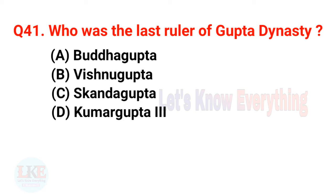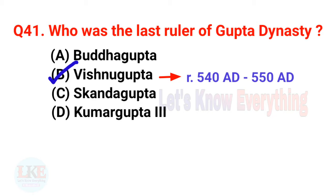Last and final question — Question 41: Who was the last ruler of the Gupta dynasty? Options: A — Buddha Gupta, B — Vishnu Gupta, C — Skanda Gupta, D — Kumar Gupta III. Right answer: option B — Vishnu Gupta, not Skanda Gupta. Vishnu Gupta was the last ruler of the Gupta dynasty, reigning from 540 AD to 550 AD.